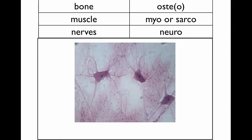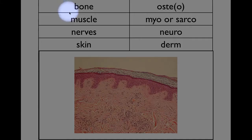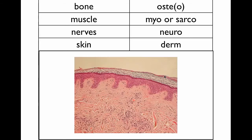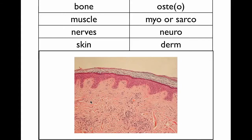Neuro refers to nerves. A neuron is a nerve cell, and there are many other terms that use that root. When you see derm, that refers to the skin. The epidermis is the top layer — epi means 'on top' — and it has five layers. Beneath the epidermis is the dermis, the dermal layer. You've probably heard of dermatitis, which is just inflammation of the skin, or a dermatologist.